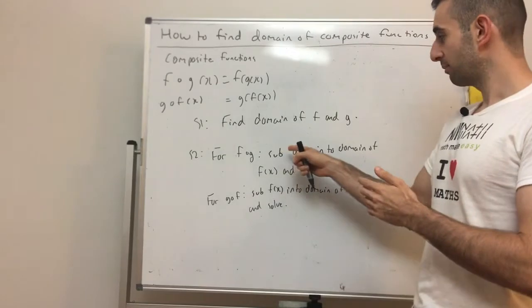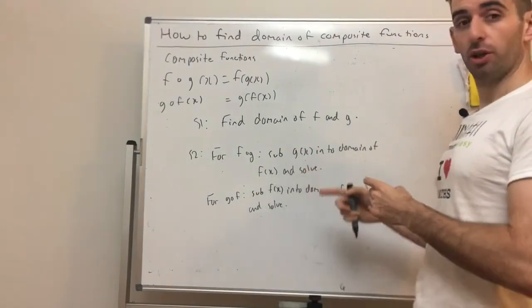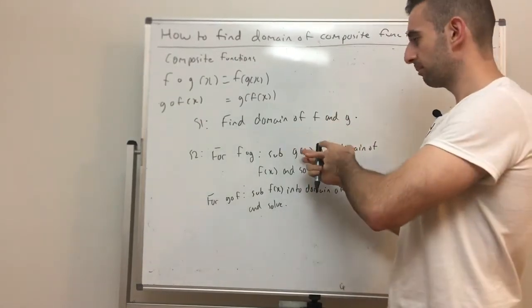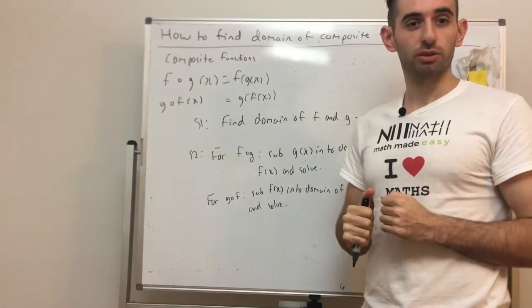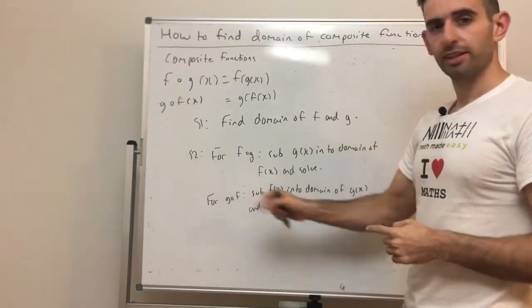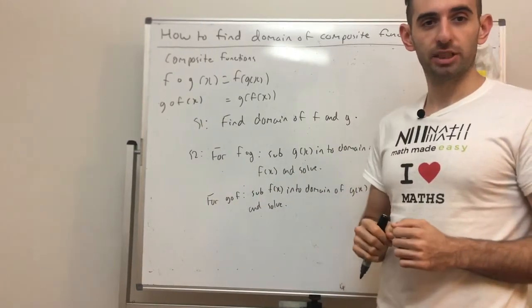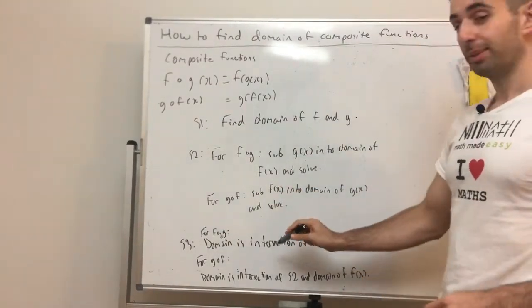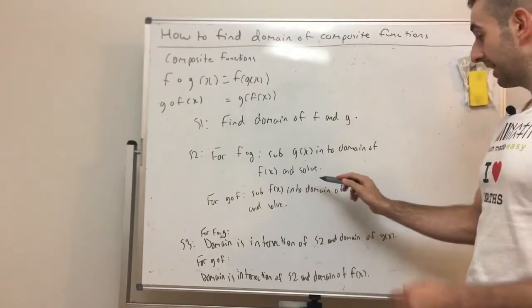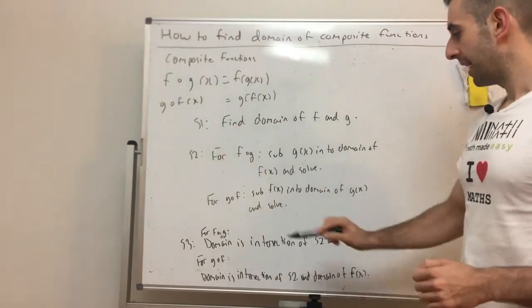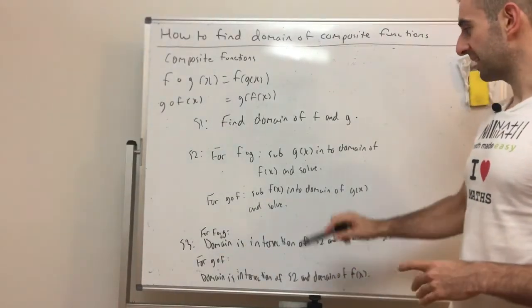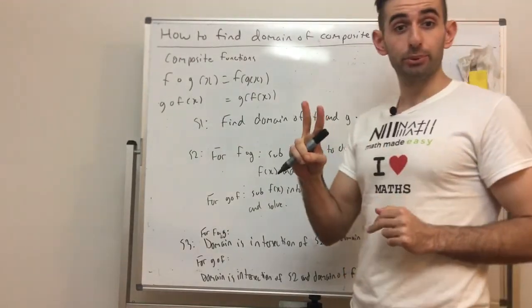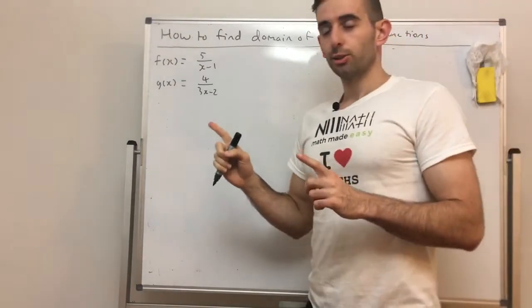Step two: depending on which direction we're going — say we're subbing g into f — we take g(x) and substitute it into the domain restriction of f(x), then solve to find a new restriction. For g∘f, we sub f(x) into the domain of g(x). Step three: for f∘g, the domain is the intersection of what we found in step two and the actual domain of g(x). For g∘f, it's the intersection of step two's result and the domain of f(x).